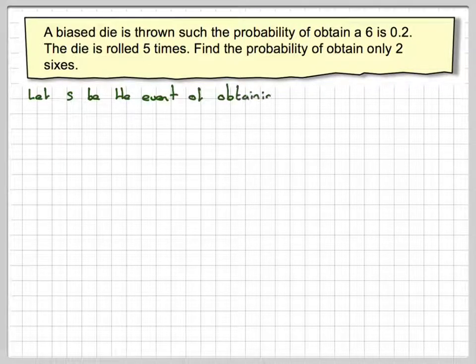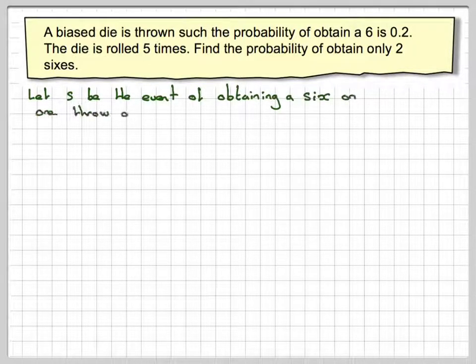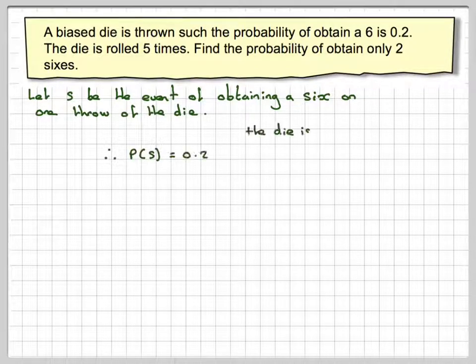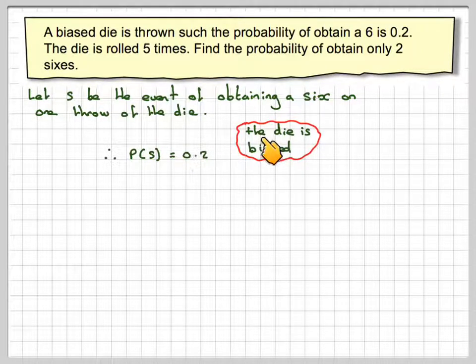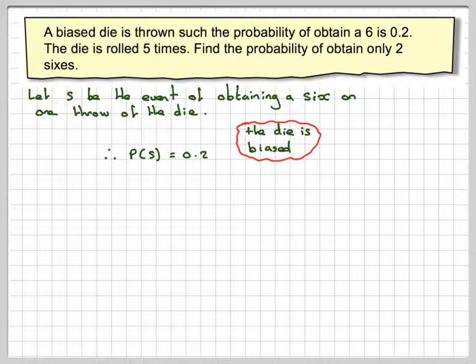Okay, let S be the event of obtaining a six on one throw of the die. The probability of S is 0.2, so it's not like the normal probability because the die is biased. That means it doesn't behave how it should do.